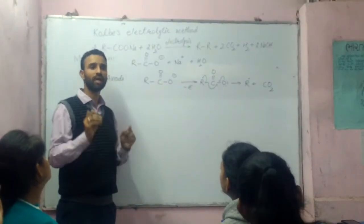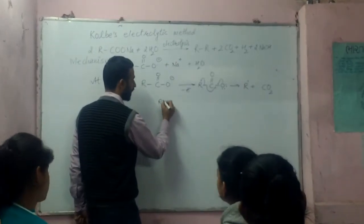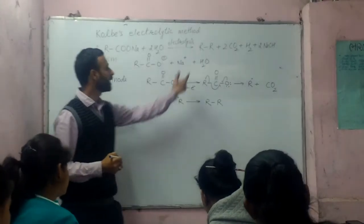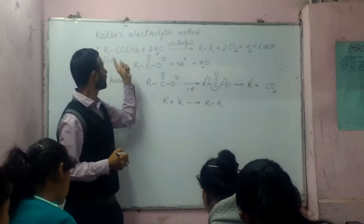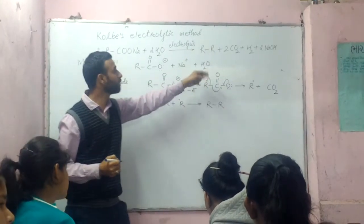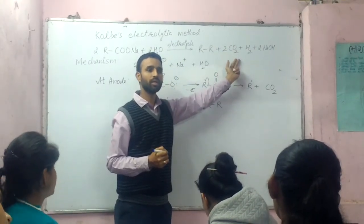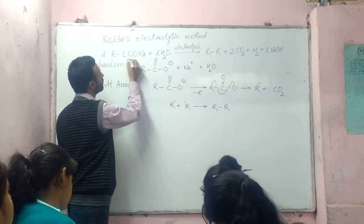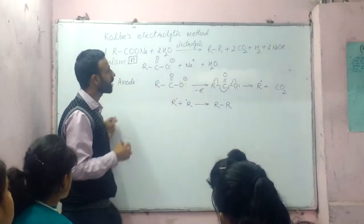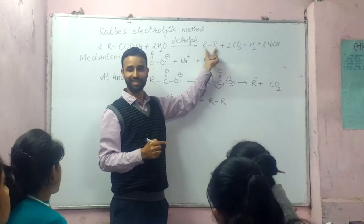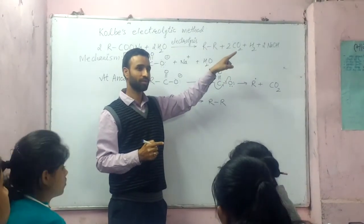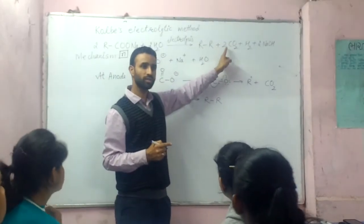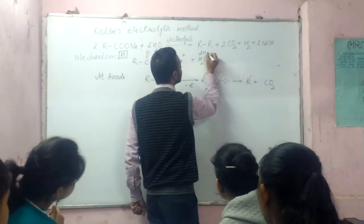The alkyl free radical is highly unstable, so it combines with another alkyl free radical and we get an alkane. The alkane is formed with double the number of carbon atoms. But at the same time, two carbons are removed in the form of carbon dioxide. So if the sodium salt of carboxylic acid has N carbons, the alkane has 2N minus 2 carbons.